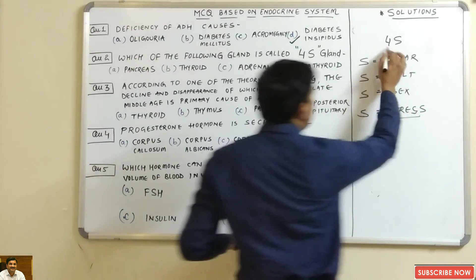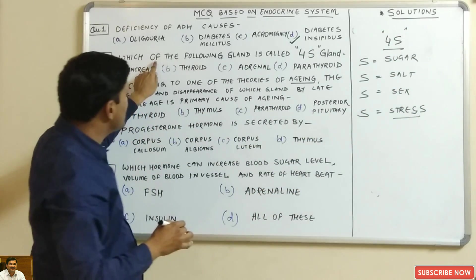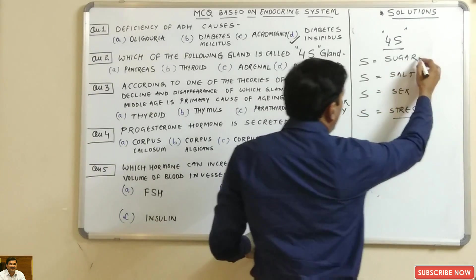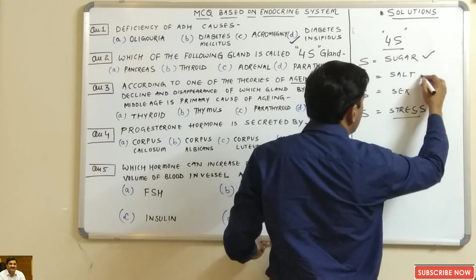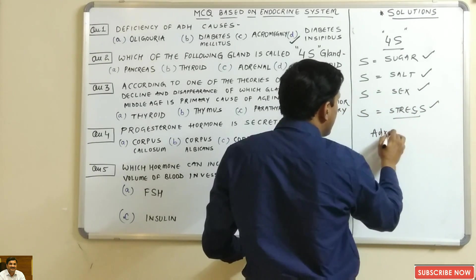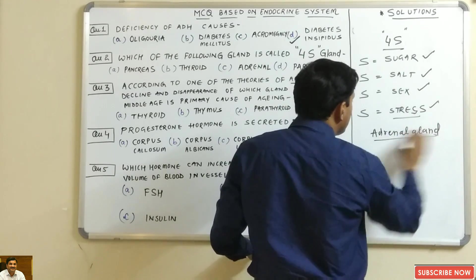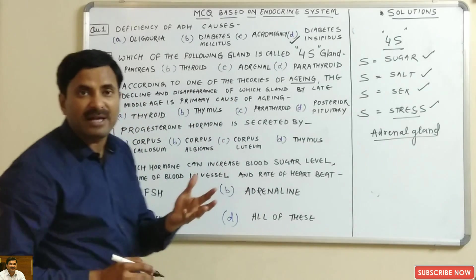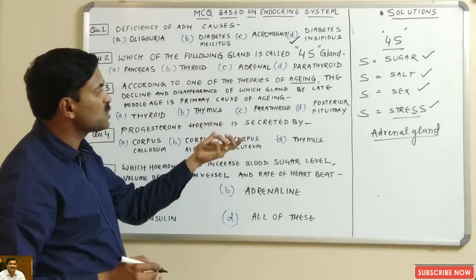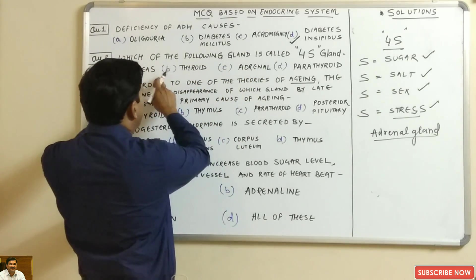All four processes — sugar, salt, sex, and stress — are regulated in our body by the adrenal gland, which is also called the suprarenal gland because it is found above the kidney. So the answer to which gland is called the 4S gland is the adrenal gland.